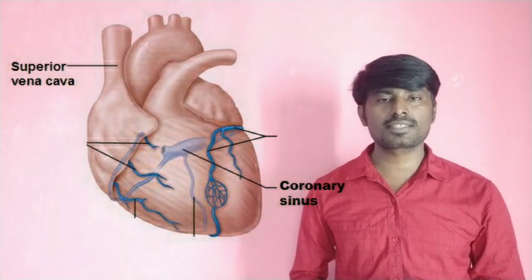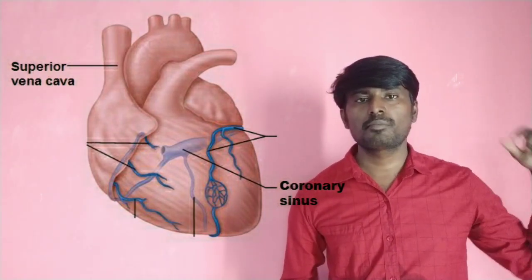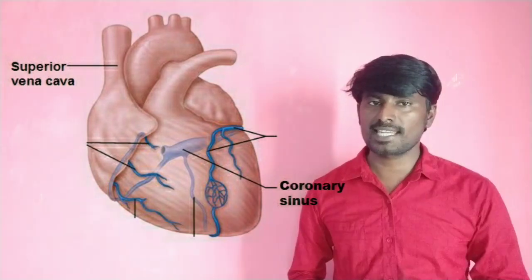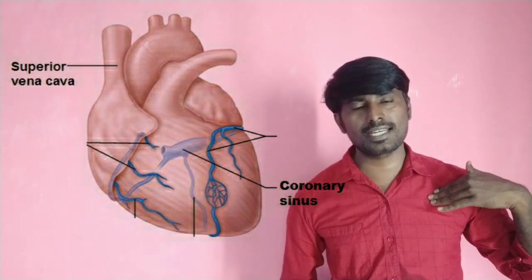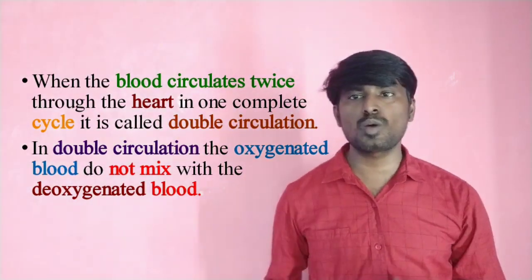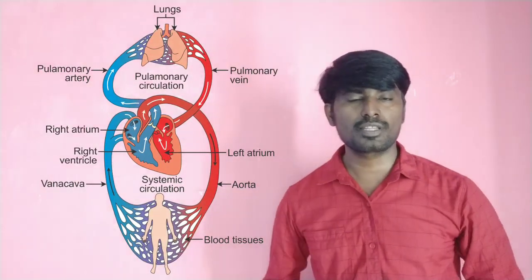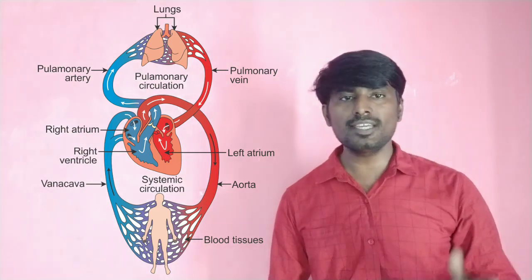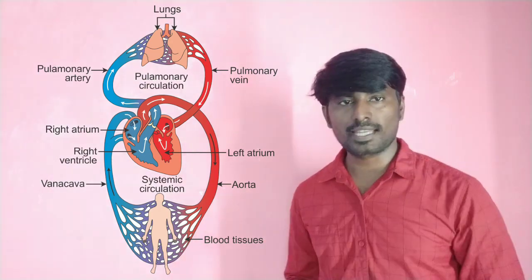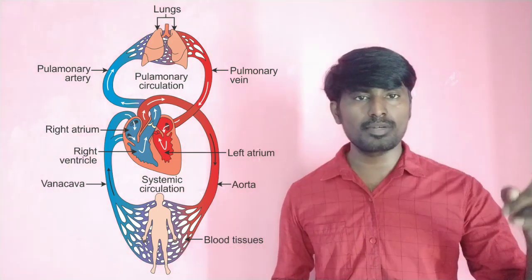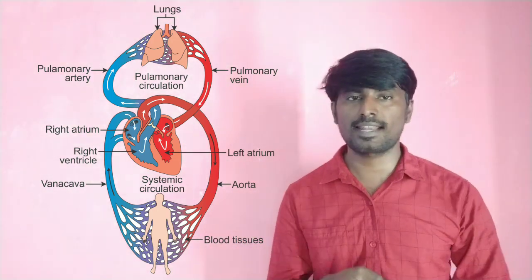One complete cycle is called double circulation, where oxygenated blood and deoxygenated blood both circulate. This is the double circulation method. Oxygenated and deoxygenated blood do not mix. This is the next video — thank you.